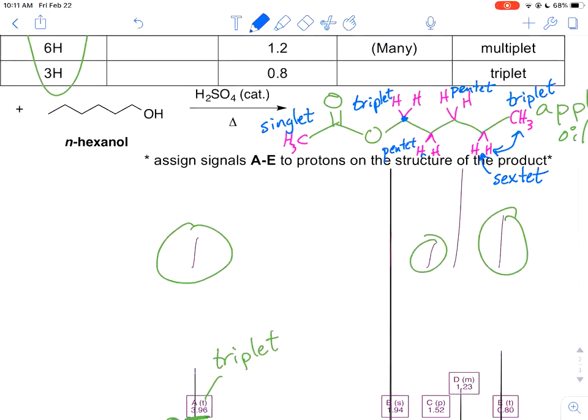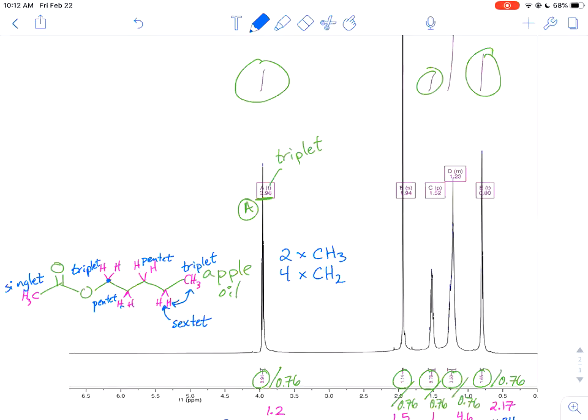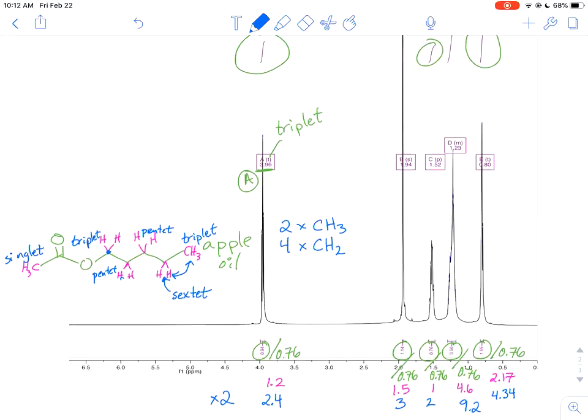So those are the potential splitting patterns that we're looking for. I think what I'm going to do rather than scroll back and forth is just drag that compound down below. So then where are we? We have our whole spectrum there. There's our integration values. So now we're going to take that back to integration. And we can use some splitting to help us sort of figure that out.